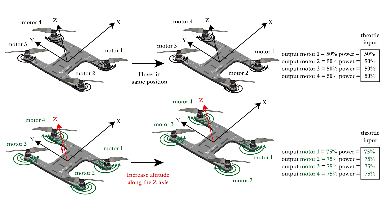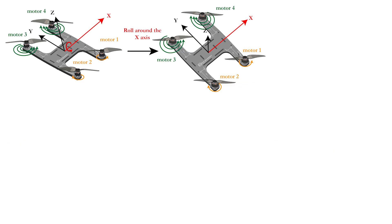The command that keeps all motors at the same power level to control the altitude of the quadcopter will be called the throttle input. When you want to change the direction of your drone, things become more tricky.